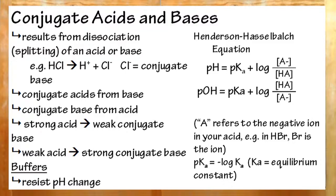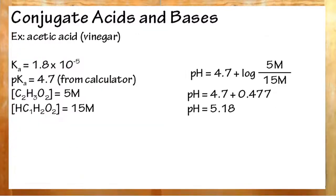Strong acids will produce weak conjugates, weak acids will produce strong conjugates. The same holds true for bases. Buffer is a solution designed to resist pH change, and you can calculate the pH using the Henderson-Hasselbalch equation. Just pH equals pKa plus log of A minus over HA.